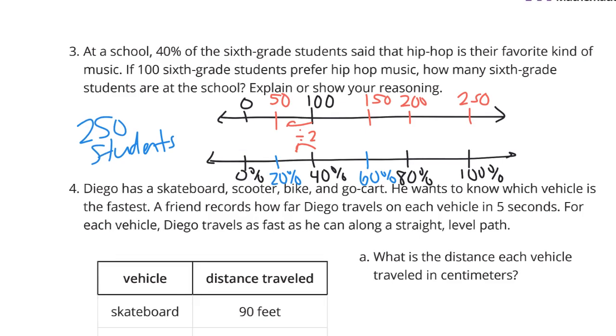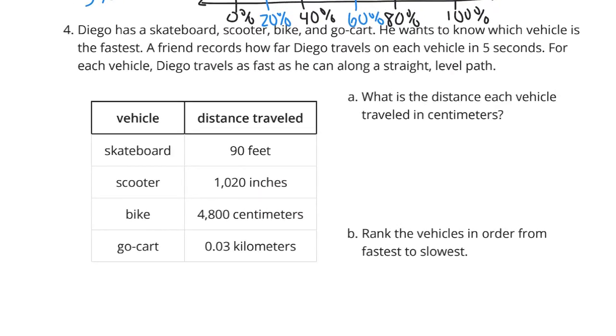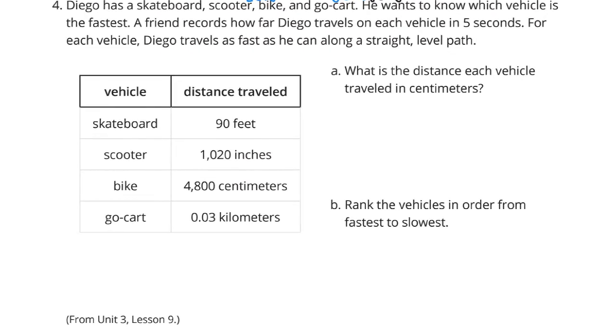Question four. Diego has a skateboard, a scooter, a bike, and a go-kart. He wants to know which vehicle is the fastest. A friend records how far Diego travels on each vehicle for 5 seconds. For each vehicle, Diego travels as fast as he can along a straight level path. What is the distance each vehicle traveled in centimeters?